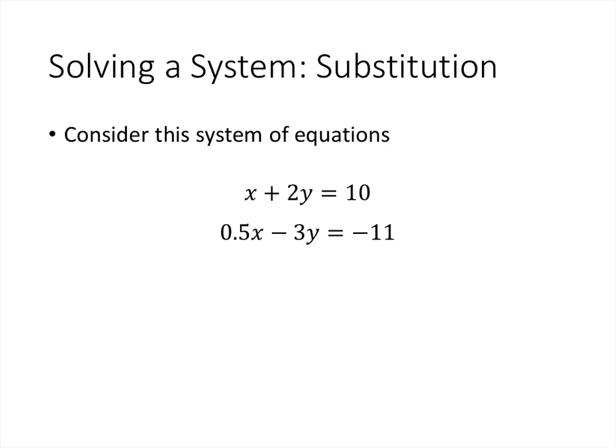You might already be familiar with the substitution method. In that method, we pick one of the equations, solve it for one of the variables, and substitute it into the other equations. The easiest way to approach this system would be to take the first equation and solve it for x, rewriting x as 10 minus 2y, and then substitute that into the other equation.